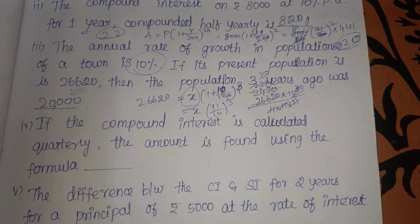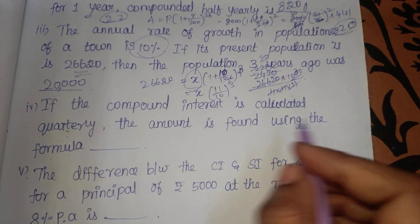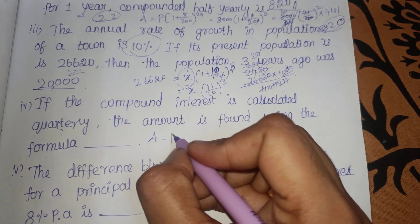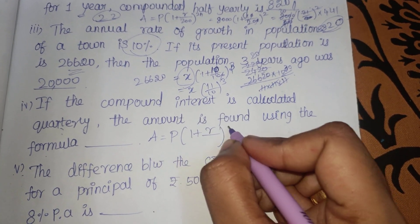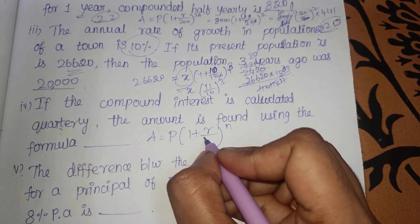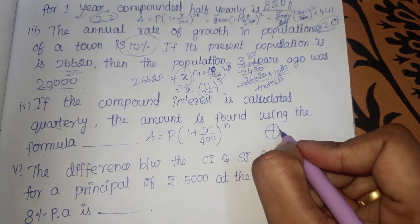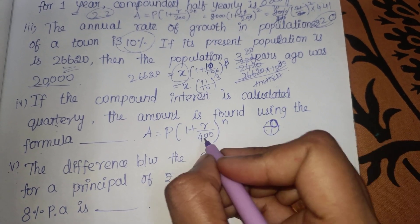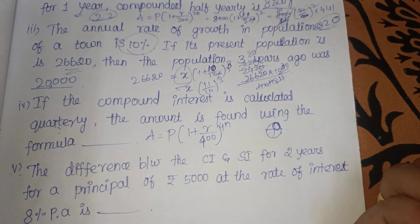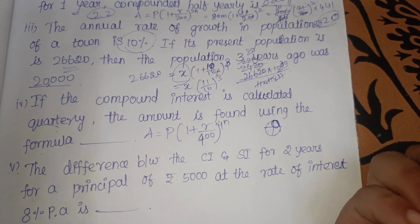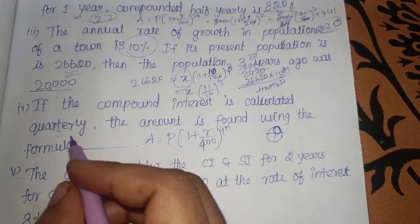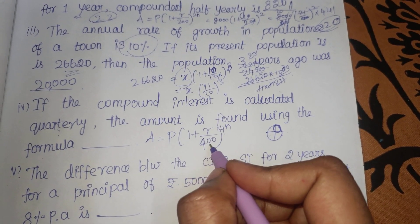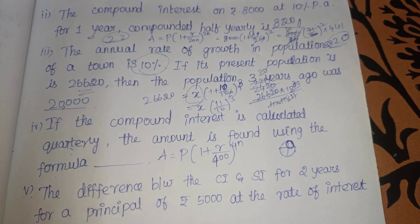If the compound interest is calculated quarterly, how do you find the amount? The annual formula says: Amount = P × 1 plus r by 100, the whole power N. For quarterly, the rate becomes R by 400 and the power becomes 4N — you can get it 4 times per year. Now we will add those together.